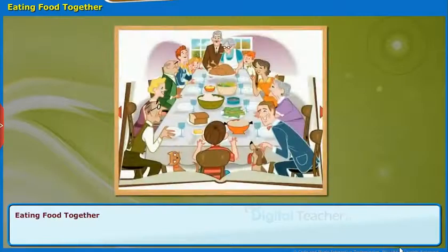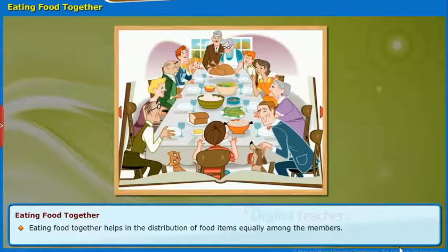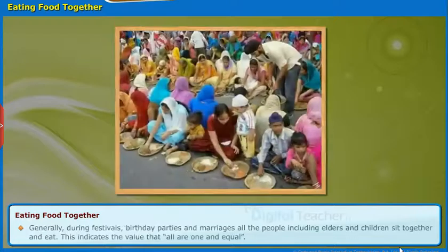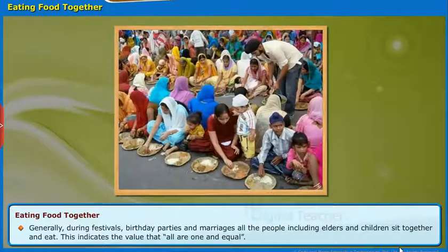Let us know the importance of eating food together. All the members of the family should eat together. Eating food together helps in the distribution of food items equally among the members. We feel happy when we eat together. Generally, during festivals, birthday parties and marriages, all the people including elders and children sit together and eat. This indicates the value that all are one and equal.